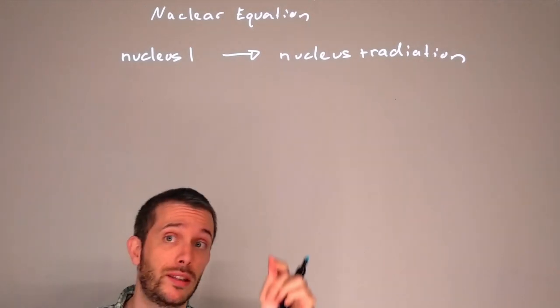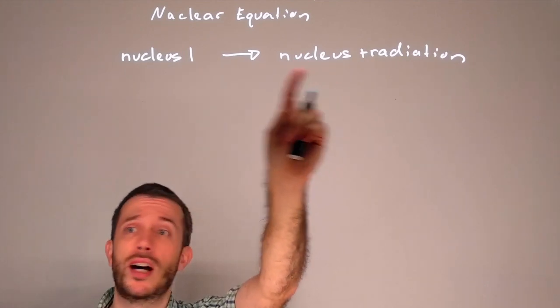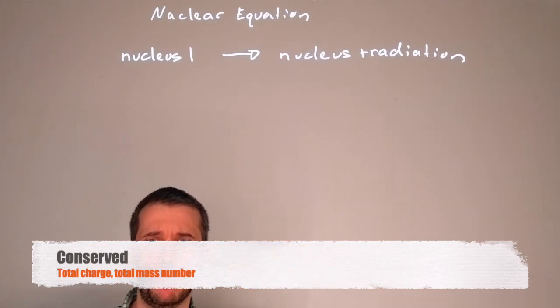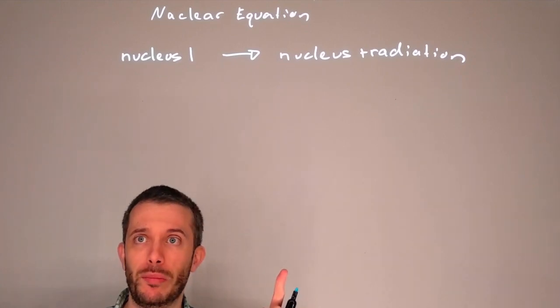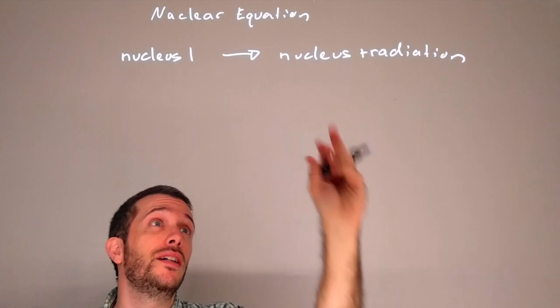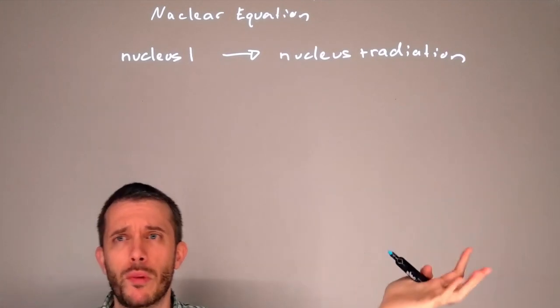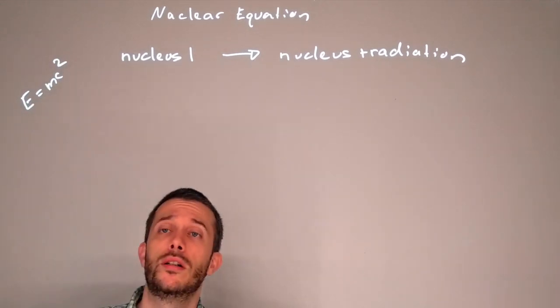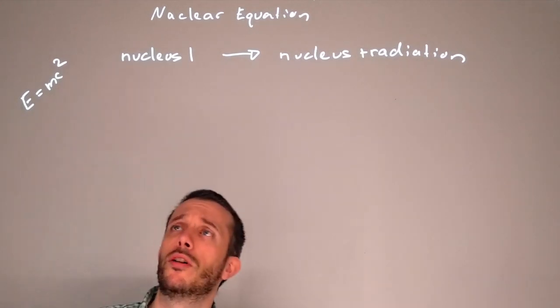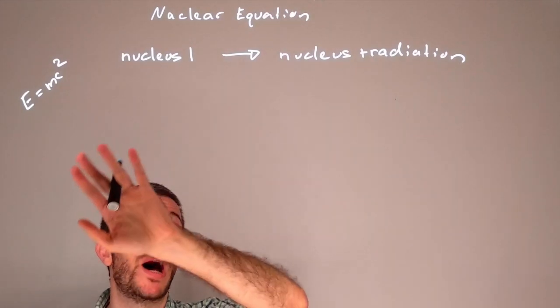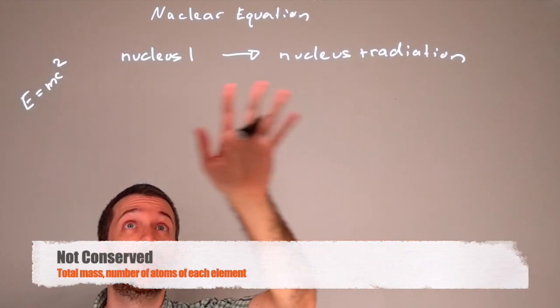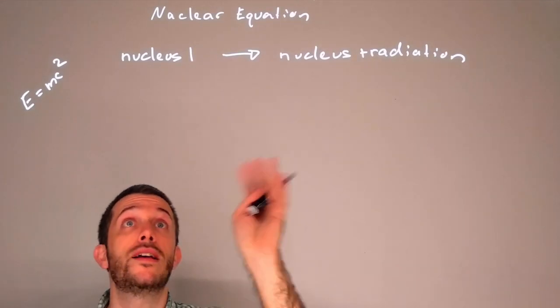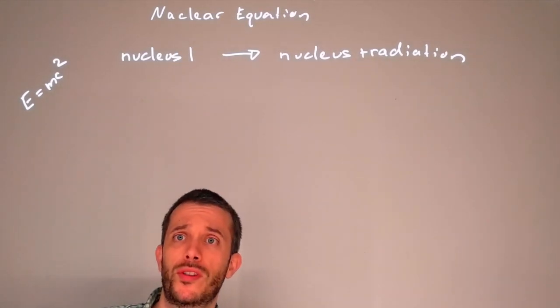What stays the same is that the charge on both sides, the total charge should remain the same, and the total mass number should remain the same. Not the total mass. Why not the total mass? Some of the mass is going to be transformed according to probably the most famous physics formula that's out there. Some of the mass gets transformed into energy according to E equals mc squared. So the mass is not conserved. The elements are not conserved. However, the mass numbers are conserved as is the total charge on both sides of the equation.